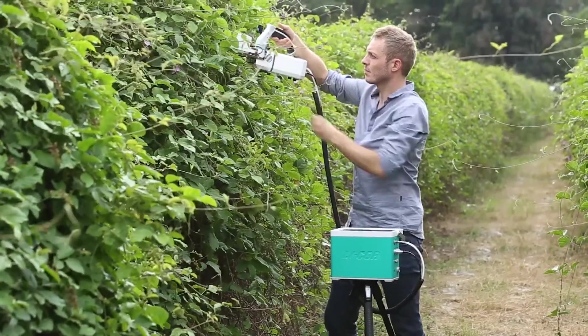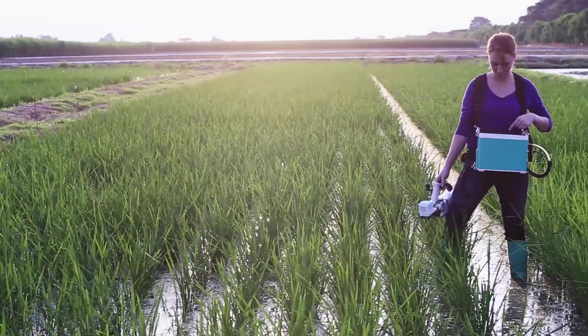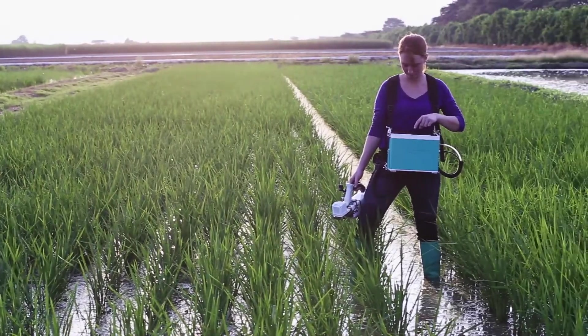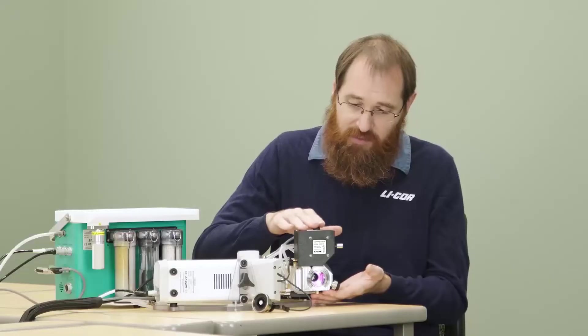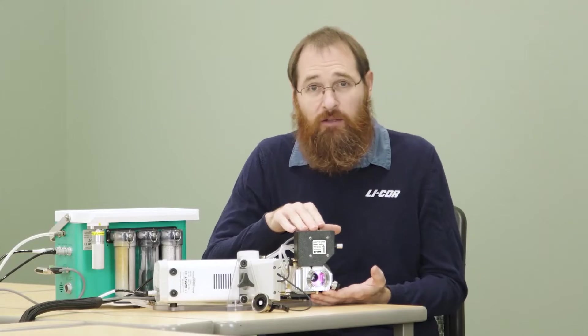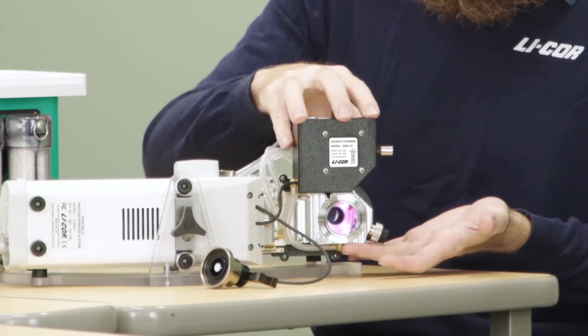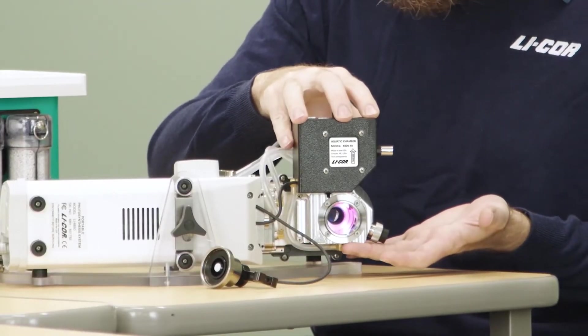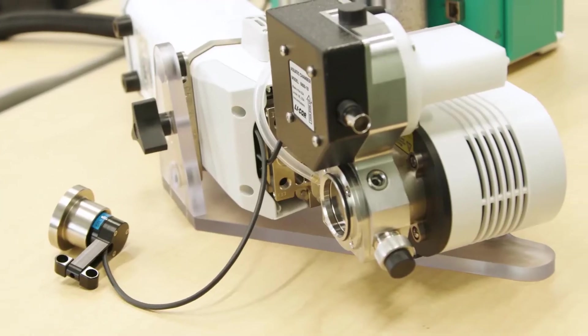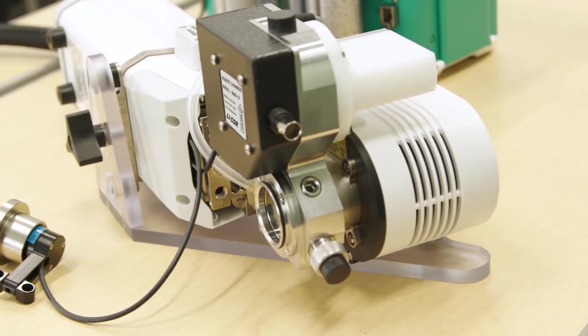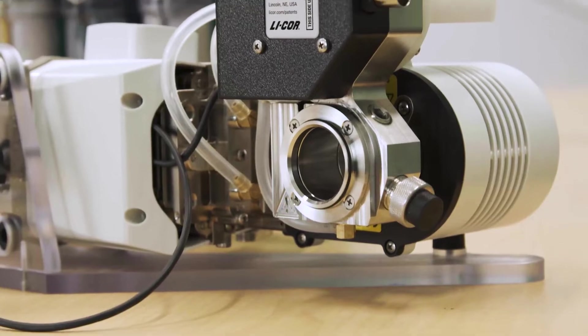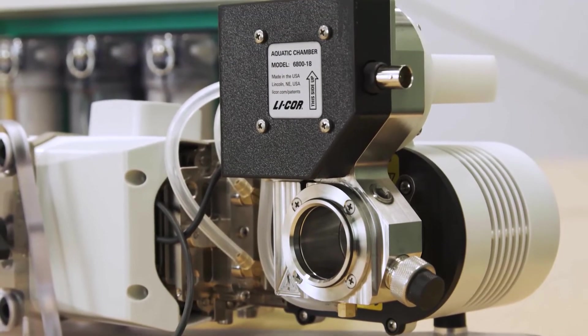Traditionally this instrument was only meant for measurements on leaves or small plant canopies. We now offer the 6800-18 aquatic chamber, this piece here, that allows us to adapt the normal instrument to make measurements on samples in liquid suspensions, like algal cells in a growth medium.